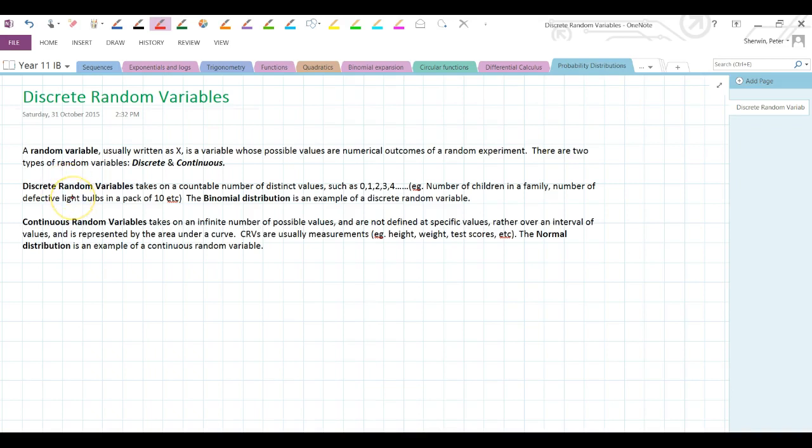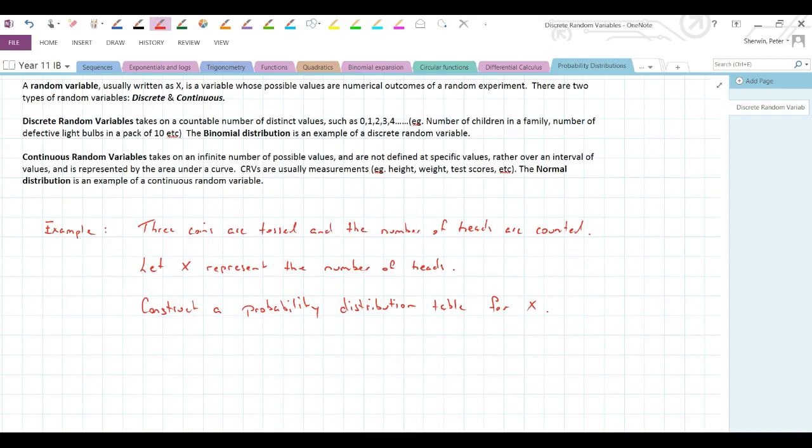But firstly, let's just have a look at an example of a discrete random variable. So, we'll have a look at an example. I might pause here and write this example out. Okay, the example is written out, and this is it. Three coins are tossed simultaneously. They're thrown up in the air and the number of heads are counted. So, let X represent the number of heads. So, X is our random variable. And it's a discrete random variable because it's going to be a whole number. It's countable. So, it's either going to be no heads, one head, two head or three heads. Construct a probability distribution table for X.